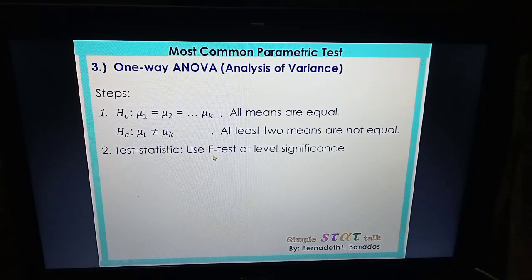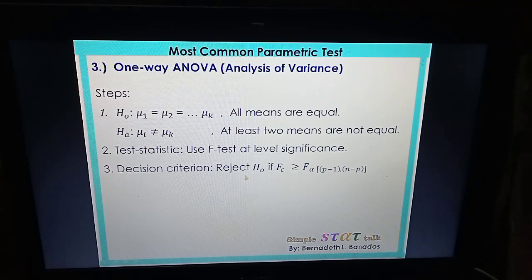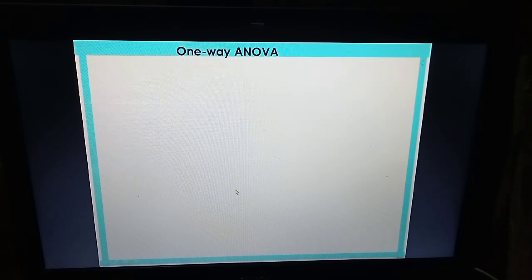We are going to use the F-table for the critical value, and then our decision criterion: we need to reject null if the computed F-value is greater than or equal to the critical value. We are going to obtain this value using the F-table.